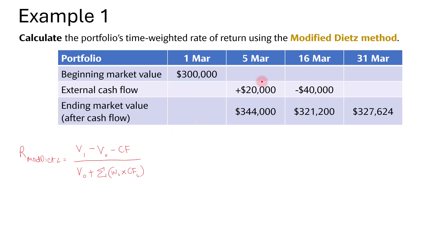There are two cash flows. For the first one, on 5th March, you measure the weightage in terms of the length of time that the cash flow has been in the portfolio until the end of the month. From 5th March to 31st March, that would be a total of 26 days — so 26 days over the entire month of 31 days. That is the weight for the $20,000 cash flow.